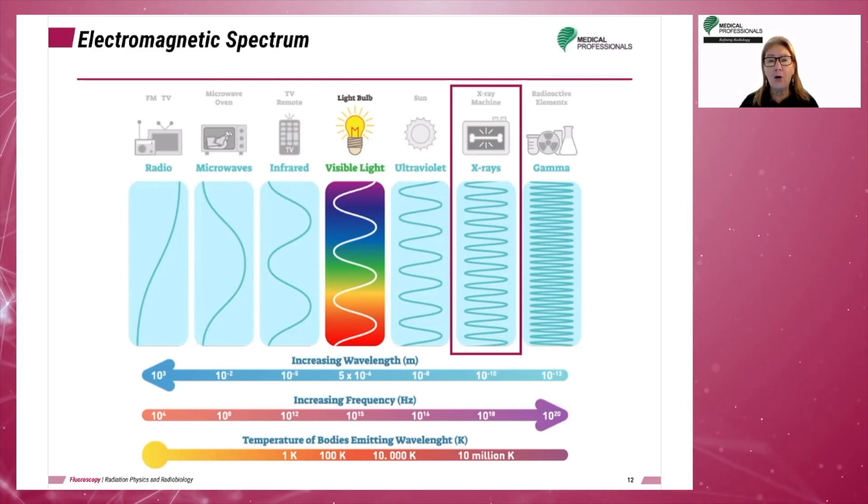Not all radiation on the EMS is ionizing. Ionizing radiation has the ability to interact with atoms, removing an electron, and thus has the ability to interact with human tissue and cause biologic changes. Ultraviolet energy is the first energy level on the EMS to be able to do this. The next two energies are x-rays and gamma rays.